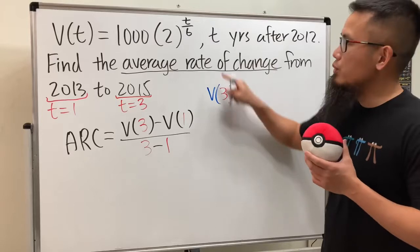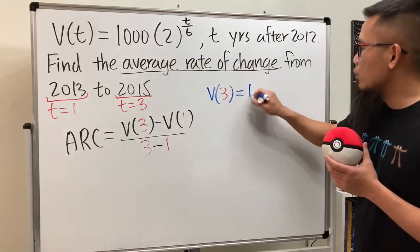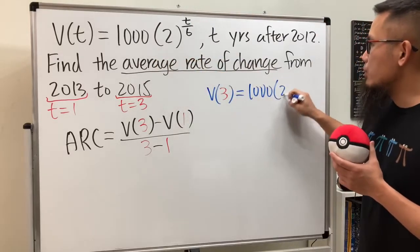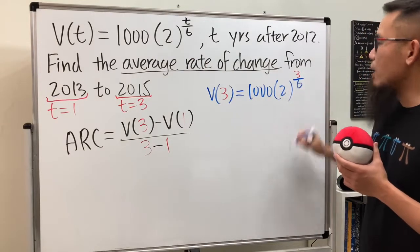This means we put 3 in here, so we are looking at 1000 times 2 raised to the 3 over 6 power.